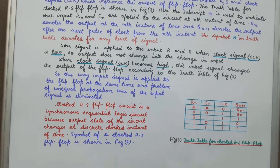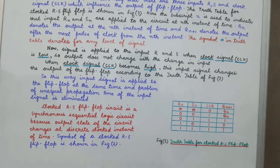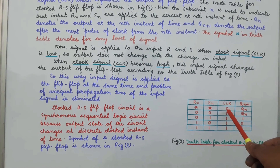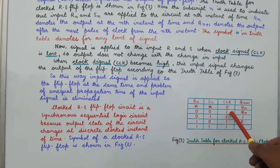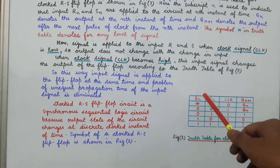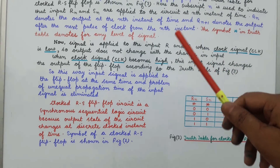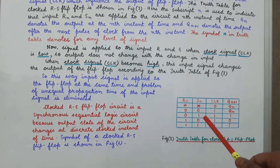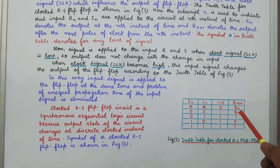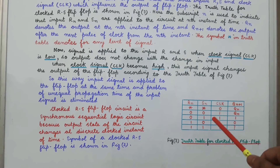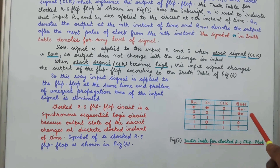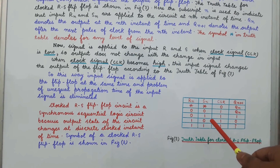Now we take the second condition: when the clock value is high — that is, clock value is 1 — then AND gates C and D will be enabled. When we give the input value, the output will be produced accordingly. So this will work just like an RS flip-flop.